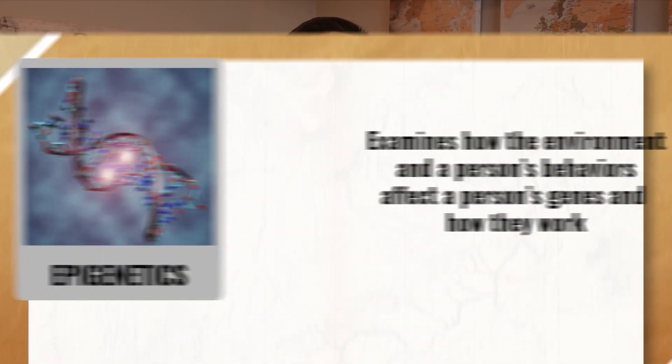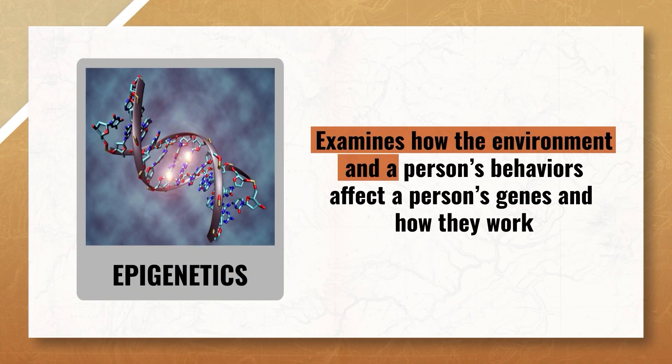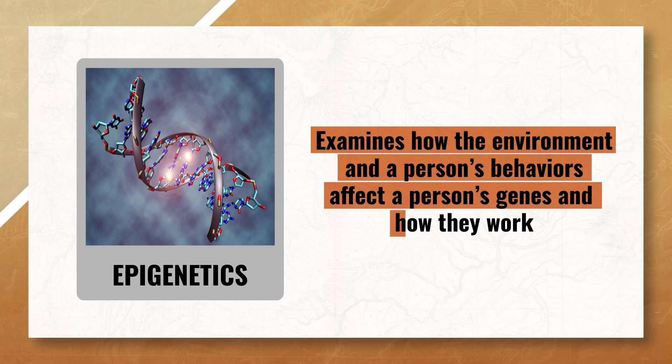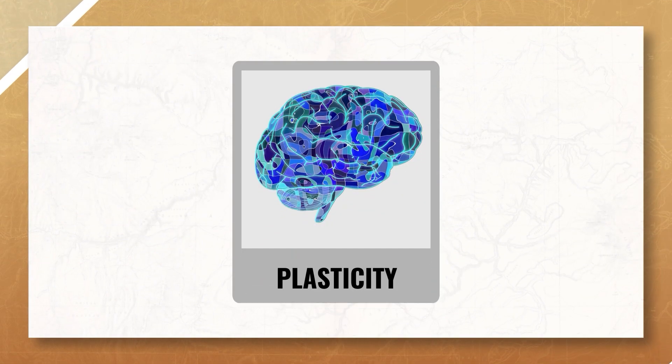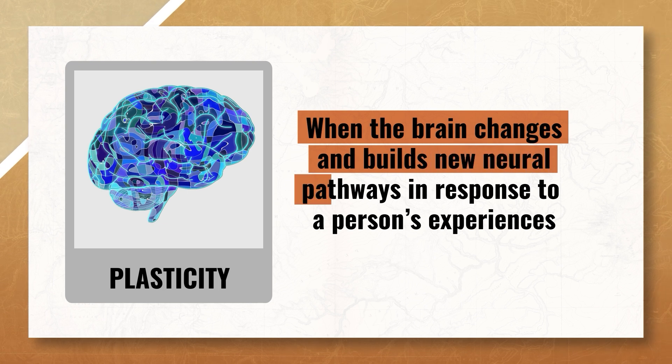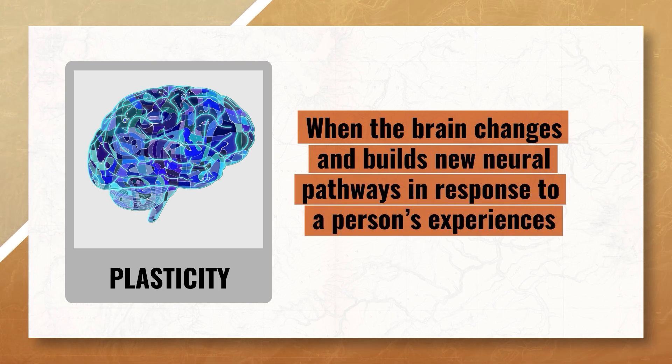When trying to understand this balance, we can turn our focus to the study of epigenetics, which examines how the environment and a person's behaviors affect their genes and how they work. Notice I said how your genes work — the focus is on how the body reads the DNA sequence; the DNA itself is not changing. Epigenetics happens slowly, as genes are essentially being turned on or off due to sustained environmental pressures. This is not something that happens because of one situation. One concept students sometimes confuse with epigenetics is plasticity, which is when the brain changes and builds new neural pathways in response to a person's experiences. We'll go more into plasticity later in this unit when we talk about the brain.